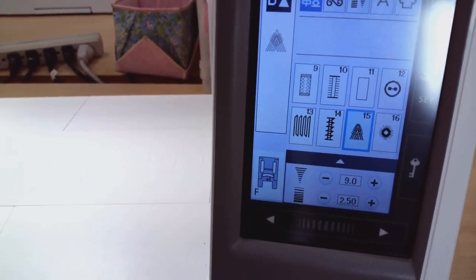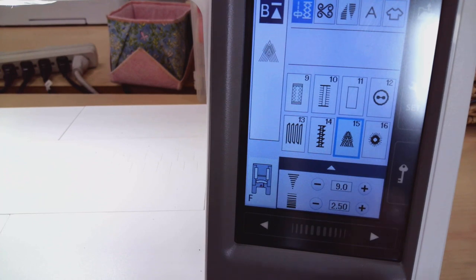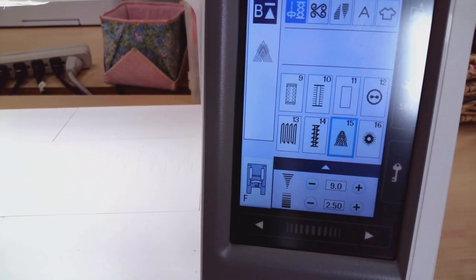So there's another stitch I'd like to show you. That bar tack you'll also find on the Janome machines. We can see here this is the bar tack stitch right here but the one I want to show you is the one right next to it, number 15.